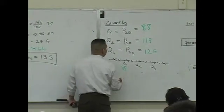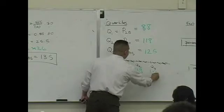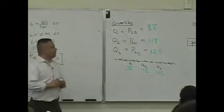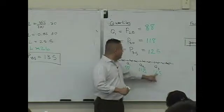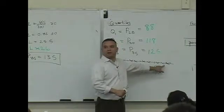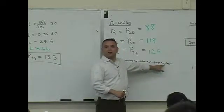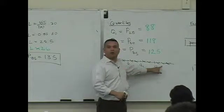88, 118, 125. So anyone that has a score on that sheet, a test score above 125 is in the what? They're above the third quartile.